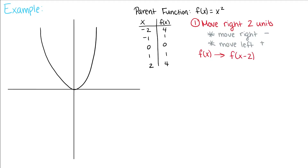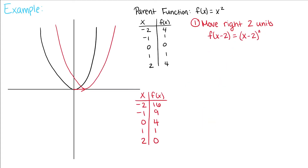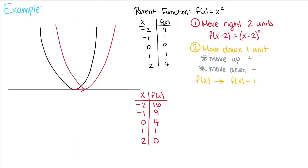So our function becomes f(x) = (x - 2)². Our new table of values becomes: x = -2 gives 16, x = -1 gives 9, x = 0 gives 4, x = 1 gives 1, and x = 2 gives 0. We can see that shift in the graph. Next, let's move our function down one unit. This goes from f(x - 2) to f(x - 2) - 1, so our function becomes f(x) = (x - 2)² - 1. We update our table of values and move it down one unit.